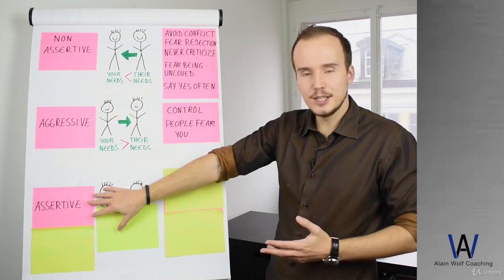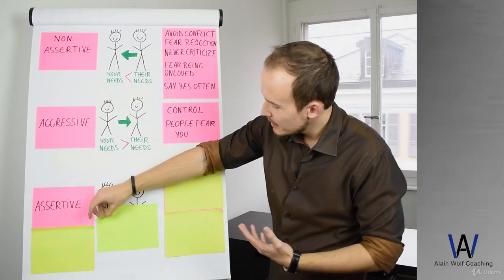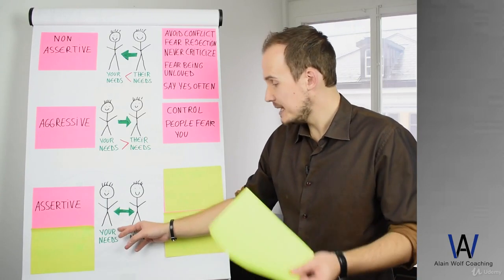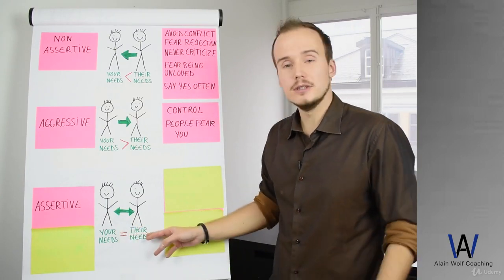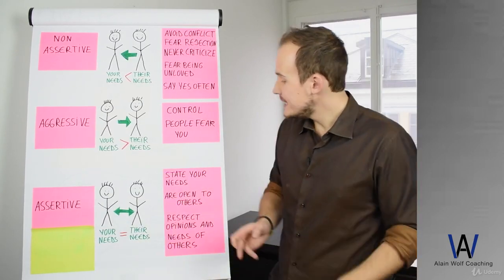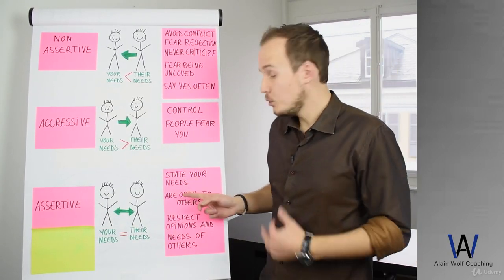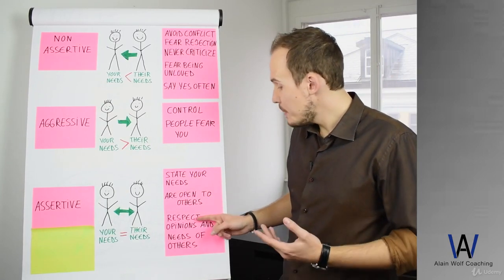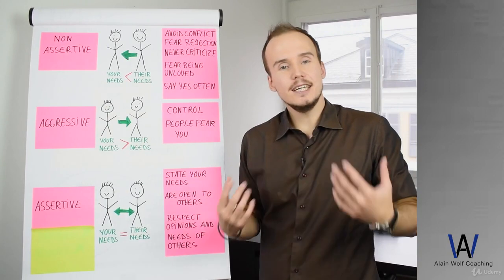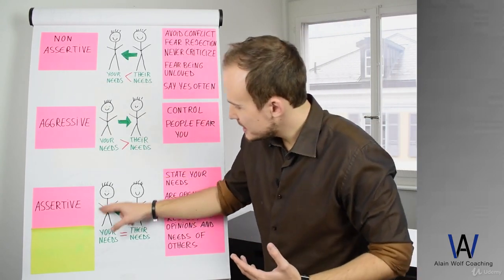And now you have the assertive style. The assertive style is when you consider that your needs are as important as their needs. For example, you will state your needs, you are open to others, you will respect opinions and needs of others.